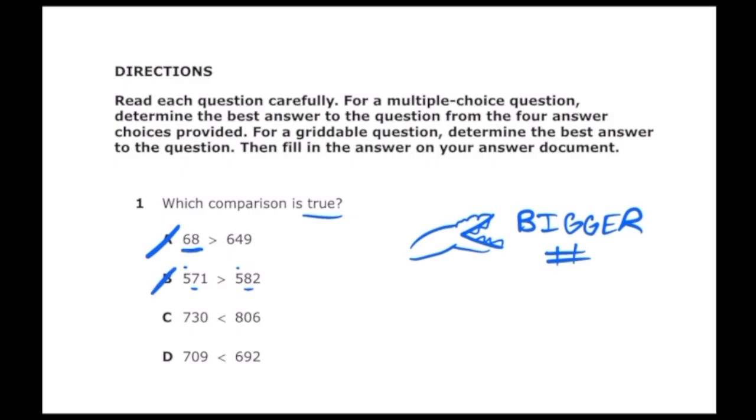For letter C we have 730 and 806. If we look at the hundreds place we have a 7 and an 8. The alligator is facing the 806 which is bigger. If we check letter D we can see that we have 709 and 692, and 692 is not greater than 709, so the correct answer is letter C.